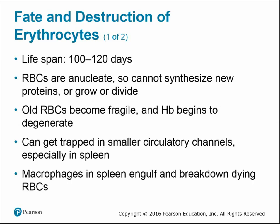Red blood cells have a lifespan of about 100 to 120 days. Being anucleate, they cannot synthesize new proteins or divide, so they have a definite shelf life — as they age they become more fragile and degenerate. Eventually they get trapped in smaller circulatory channels and end up in the spleen, where macrophages engulf and break down the dying red blood cells and recycle their components. The spleen is essentially the graveyard for red blood cells.